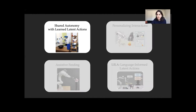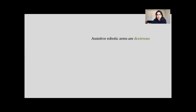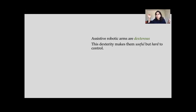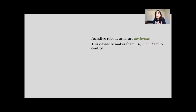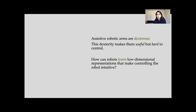So let's talk about this idea of latent actions — what is it and why is it useful? If you think about assistive robotic arms, they're often dexterous, and this dexterity makes them really useful, but it also makes them incredibly difficult to control. To go from any point in the state space to any other, you need to control six degrees of freedom. But if you condition the control on a task or context, there might exist a lower degree-of-freedom control space that is a lot easier and more intuitive for a person to use.